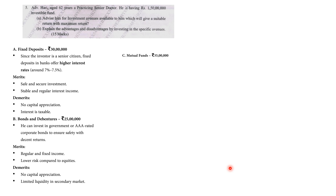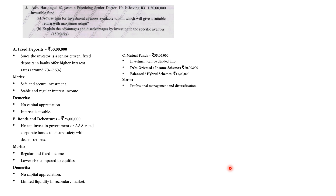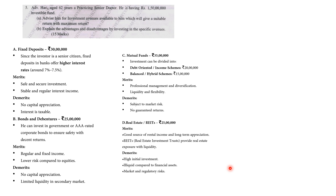Next, Mutual Funds: ₹35,00,000, which can be divided into Debt ₹20,00,000 and Hybrid ₹15,00,000. Merits: professional management, diversification, liquidity, and flexibility. Demerits: subjected to market risk and no guaranteed returns.